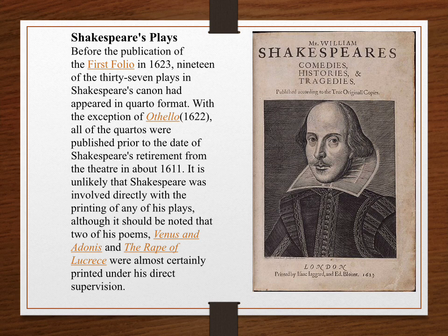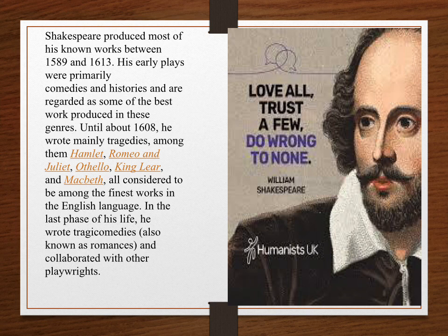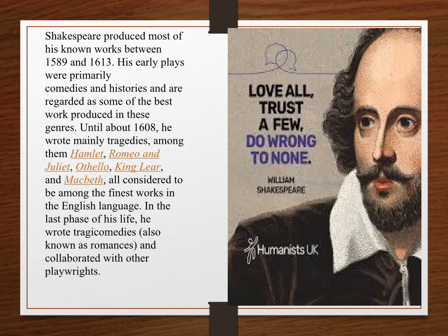All of the quartos were published prior to Shakespeare's retirement from the theatre in about 1611. It is unlikely that Shakespeare was involved directly with the printing of any of his plays, although two of his poems, Venus and Adonis and The Rape of Lucrece, were almost certainly printed under his direct supervision. Shakespeare produced most of his known works between 1589 and 1613. His early plays were primarily comedies and histories. Until about 1608, he wrote mainly tragedies. In the last phase of his life, he wrote tragicomedies, also known as romances, and collaborated with other playwrights.